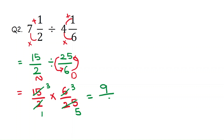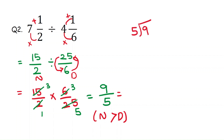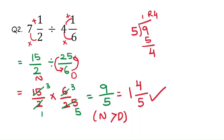That gives 9 over 5. Here the numerator is greater than the denominator, so it is an improper fraction. Now convert it into a mixed number. 9 divided by 5: 5 times 1 is 5, and the remainder is 4. So you write the quotient, which is 1, and the remainder over the divisor. The answer is 1 and 4 over 5.